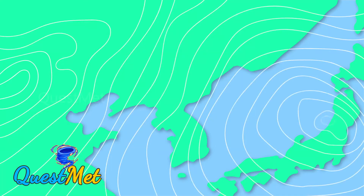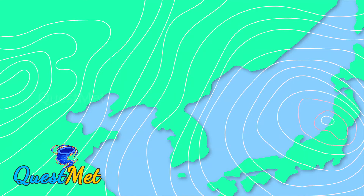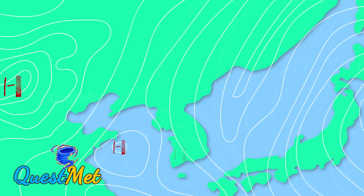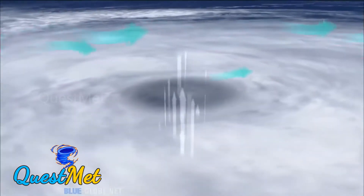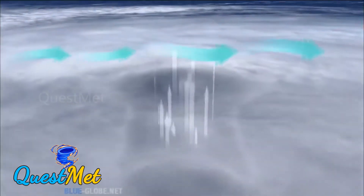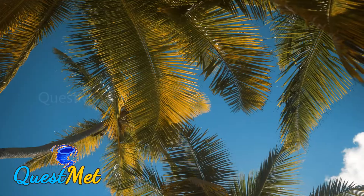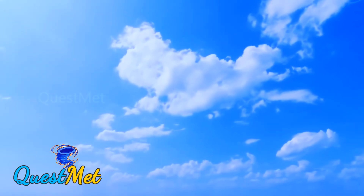On the contrary, the high pressure area is a region where the atmospheric pressure at the surface of the planet is more than the surrounding regions. In a high pressure or anti-cyclonic region, the winds diverge outwards, moving from a smaller area to a larger area, thereby reducing the wind speed. High pressure areas are usually associated with light winds, clear skies and hot weather.